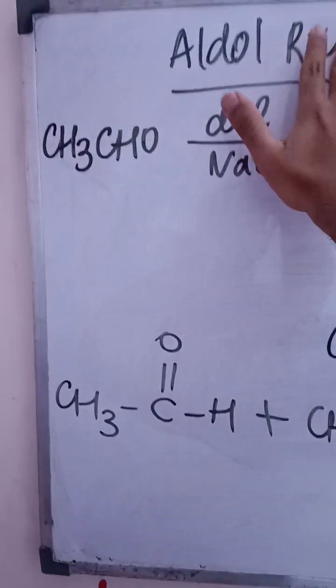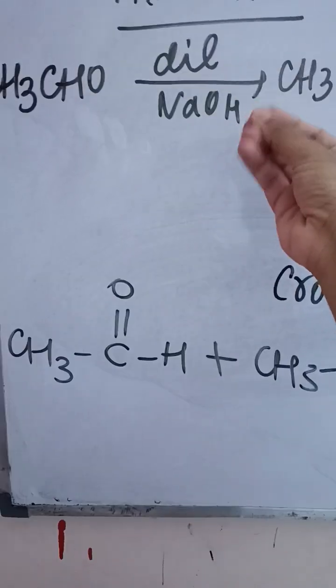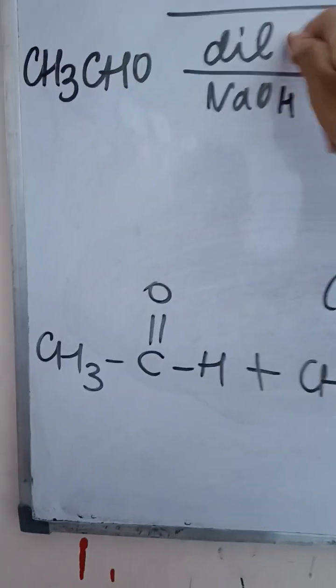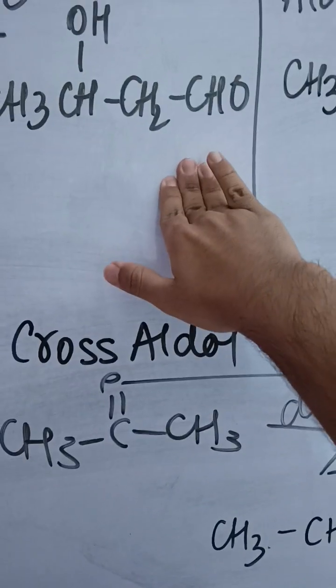What happens in aldol reaction? Aldehydes and ketones having alpha hydrogen atoms react with themselves to form self aldol products in the presence of dilute NaOH, that is dilute alkali, to form beta hydroxy aldehydes or beta hydroxy ketones.